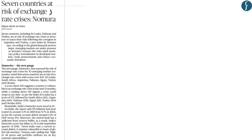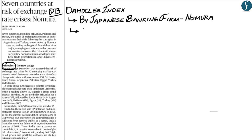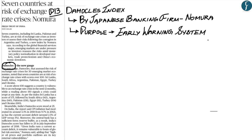The next article, taken from page 13, is about an index called Democles. This index is issued by a Japanese banking firm called Nomura. Its purpose is to serve as an early warning system that assesses the risk of exchange rate crises.